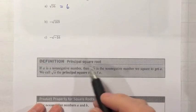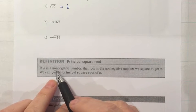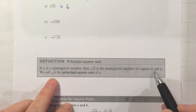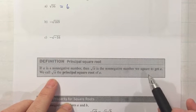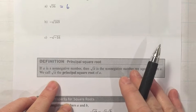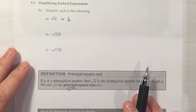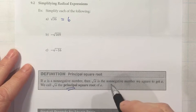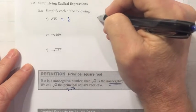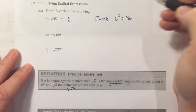Now if we come down here and actually look at the definition of that symbol, it's called the principal square root. And it says if a is a non-negative number, then the square root of a is the non-negative number we square to get a. That's kind of some technical wording. We call the square root of a the principal square root of a. The word principal we often don't use. We just say the square root of 36. But it really is the principal square root of 36, which means the non-negative answer. When you want to check that this is right, the check on your work is to take 6 and square it, and you get 36.